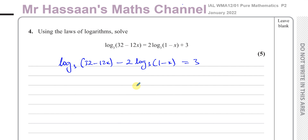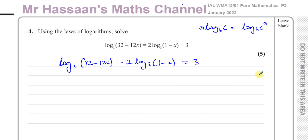Next, I need to check that both logs are to the same base — and they are. I also want to get rid of any factors like this 2 in front of the log. So I'm going to use the power law, where something like a times log base b of c is rewritten as log to the base b of c to the power of a. That's one of the three main laws of logarithms. So I'm going to rewrite this with the 2 up here as a power.